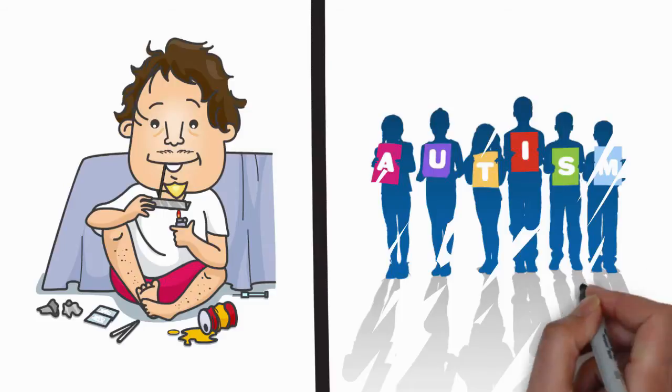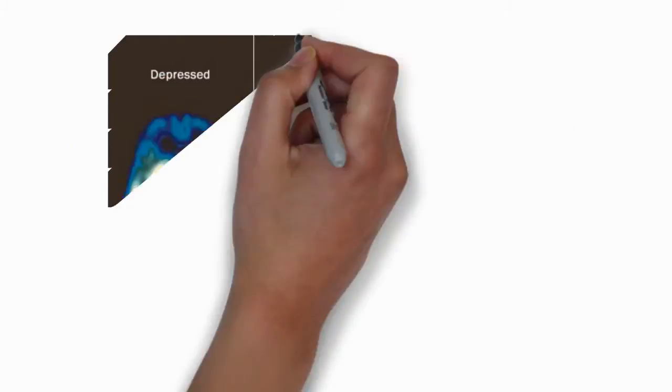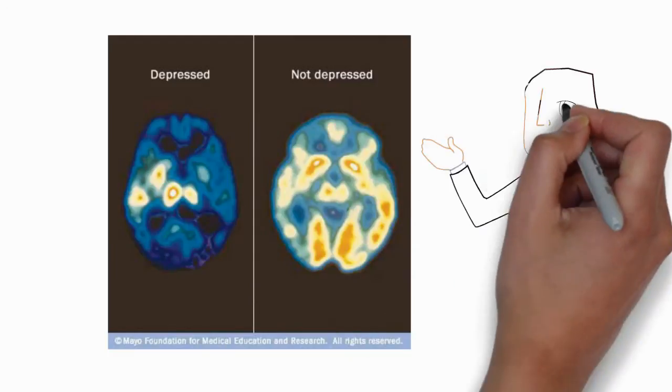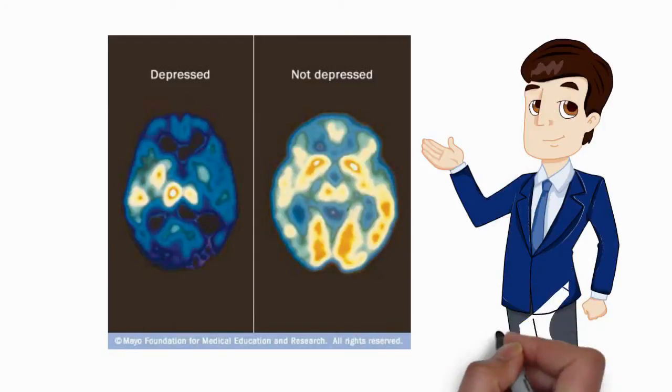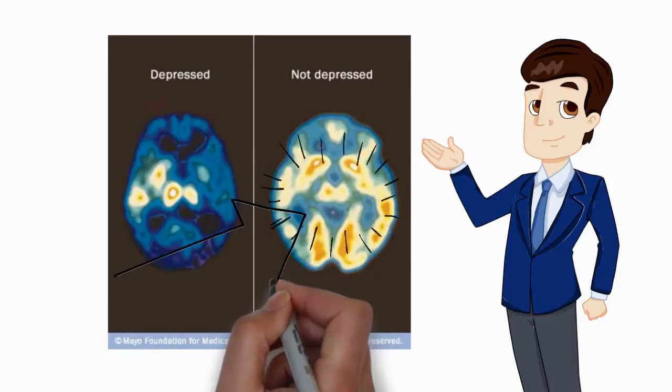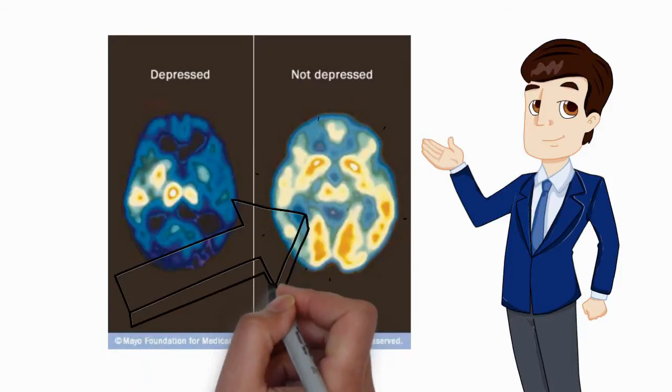So before we talk about how TMS works, let's look at a PET scan of the brain of someone healthy and someone with depression. In the PET scan, areas become bright when the brain is using its fuels such as oxygen and glucose. When the brain is very active, it uses more fuel and hence becomes much brighter.